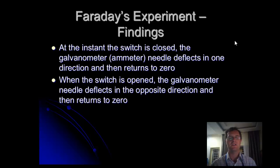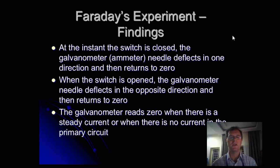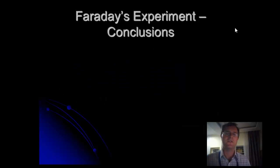So when electricity is turned on, for a moment there's a current flowing. And also when it's turned off, there's a current flowing. But at no other time — the galvanometer reads zero when there's a steady current, or when there's no current at all through the primary circuit. These were his findings. What did he conclude from this?